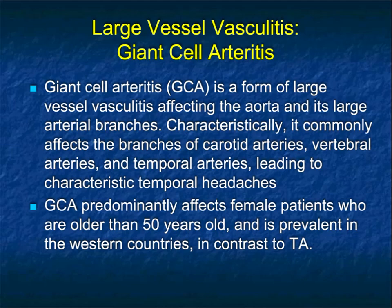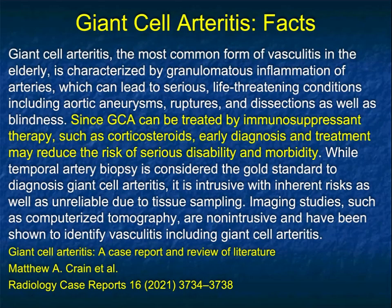Giant cell arteritis (GCA) is a form of large vessel vasculitis. It affects the aorta and its branch vessels, and commonly affects the carotid, vertebral, and temporal arteries, leading to characteristic temporal headaches, which is often the key to diagnosis. It predominantly affects female patients older than age 50 and is more prevalent in Western countries. It's the most common form of vasculitis in the elderly. It's very important to diagnose early because it can be treated with immunosupportive therapies and corticosteroids — early intervention can change the course of disease.